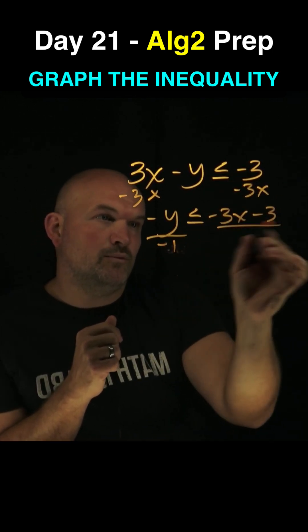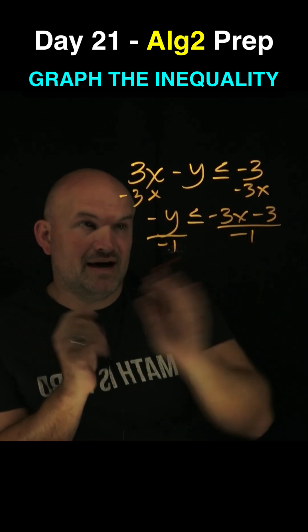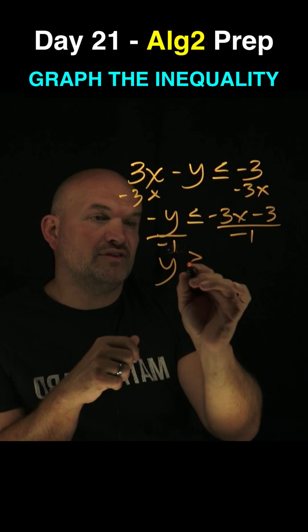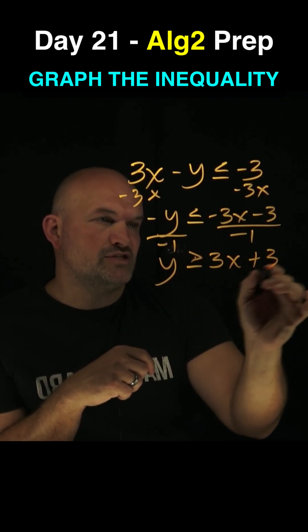Now, let's go and get the y all by itself by getting rid of multiplying by negative 1. So I'll divide by this negative on both sides, but that's going to now flip my sign to give me a y is greater than or equal to 3x plus 3.